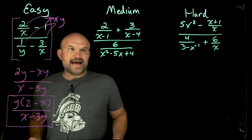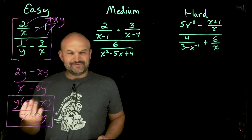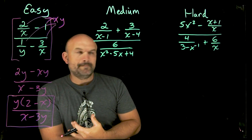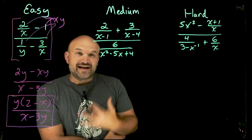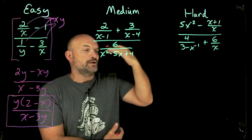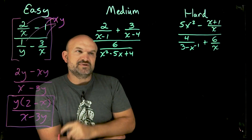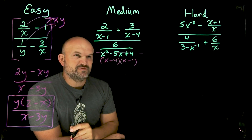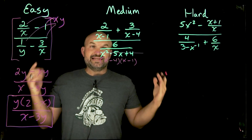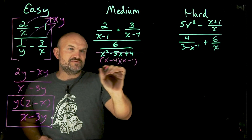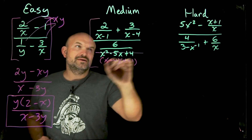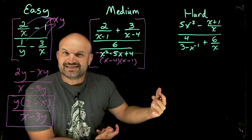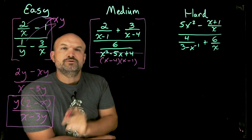Now let's get to the medium one. You can see we have some different denominators — not just individual variables, but expressions. We have two binomials and a trinomial. Whenever you see a trinomial, the reason we spend so much time in algebra factoring is because you should hear a bell saying 'factor, factor, factor.' What two numbers multiply to give us four and add to give us negative five? That's (x − 4)(x − 1). So that's my new denominator. Now I need to identify the least common multiple of x − 1, x − 4, and (x − 4)(x − 1).